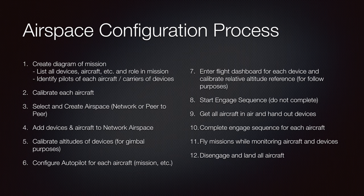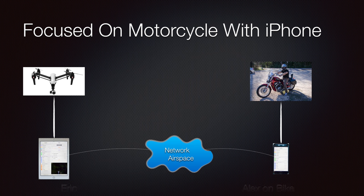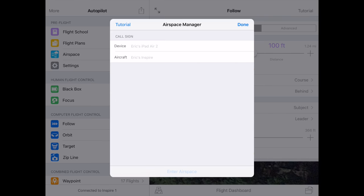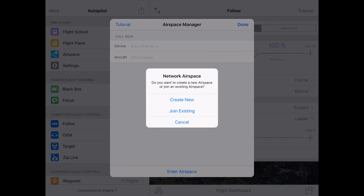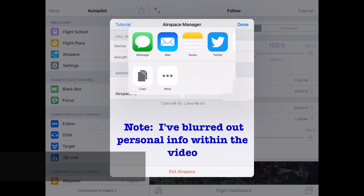Let's put this process to work in a real example. We'll start with the case where we want to free fly the Inspire focused on a moving motorcycle. My tablet will be connected to my Inspire, and I want to connect the iOS device into Airspace. Since the two devices — the iPhone that the motorcyclist will carry and the iPad connected to the Inspire — are going to be relatively far away, we're going to use network Airspace. Tap on Airspace first to enter the Airspace manager. We can use a default name for our iOS device and aircraft, or rename them.